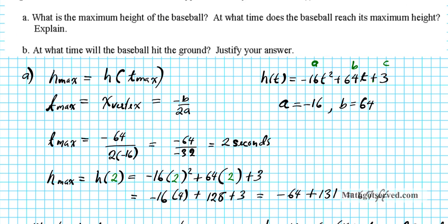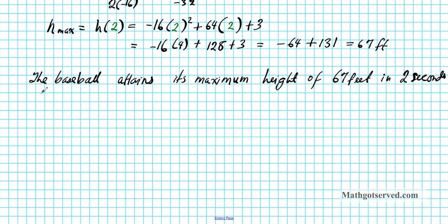Now let us shift our attention to the B part. It states, at what time will the baseball hit the ground? Justify your answer. So when does the baseball hit the ground? The baseball hits the ground when h equals what? What is the height when the baseball hits the ground? How far is the baseball from the ground when the ball is on the ground? It's 0 feet from the ground. So by setting our quadratic function equal to 0 and solving, that will help us determine the times when the distance of the ball from the ground was 0. So what we're practically going to do is we're going to solve this equation right here.